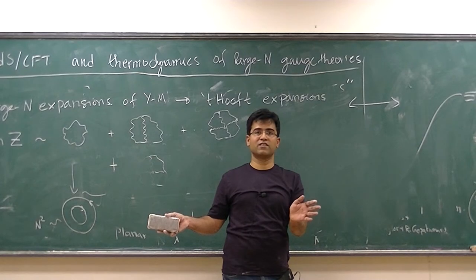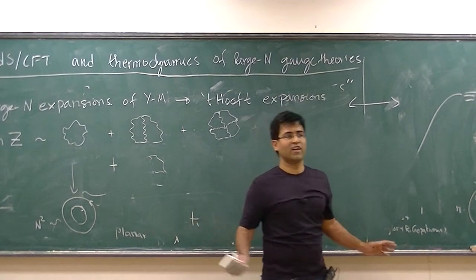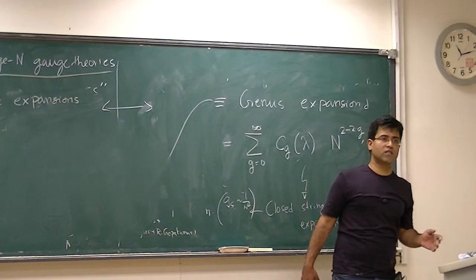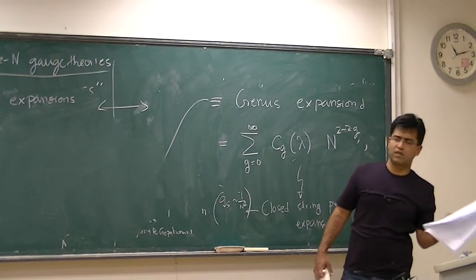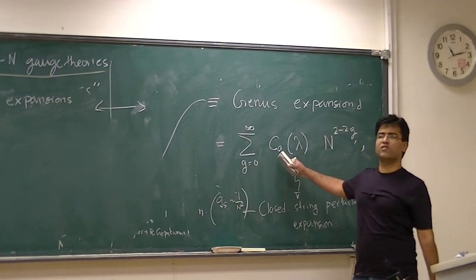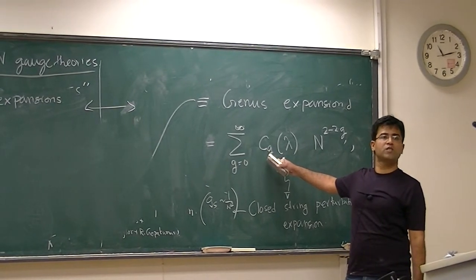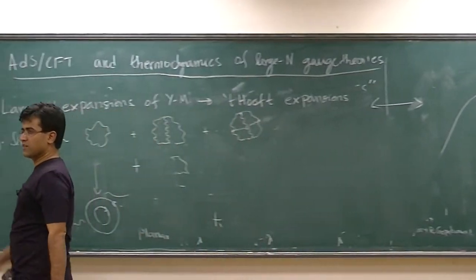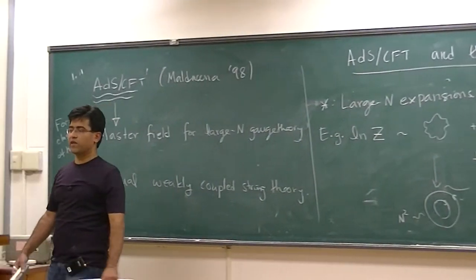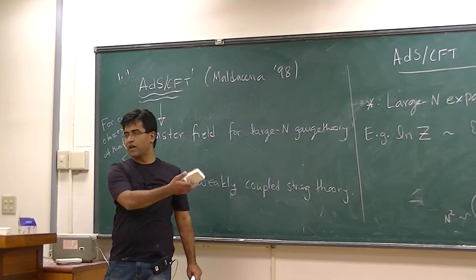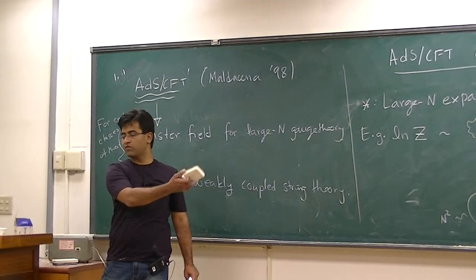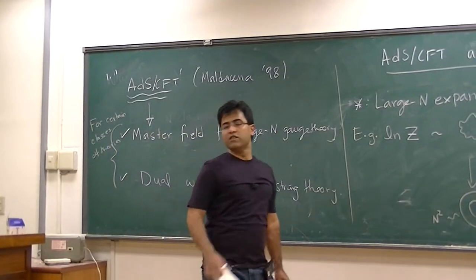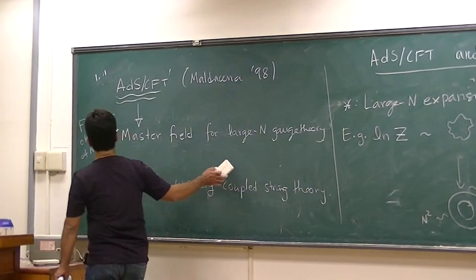It probably does converge for N=4 supersymmetric Yang-Mills. The integrability story has actually found an interpolating function — for certain observables you get an interpolating function, so there are some results there.